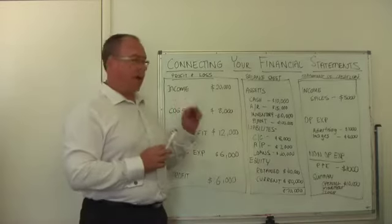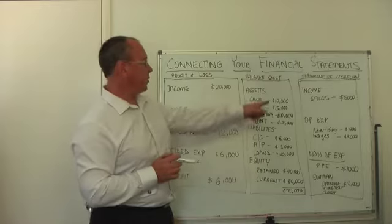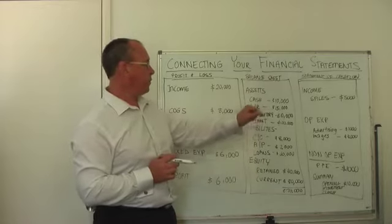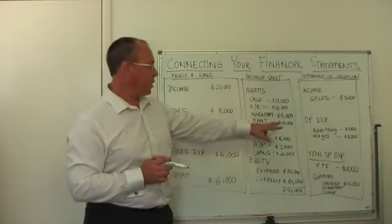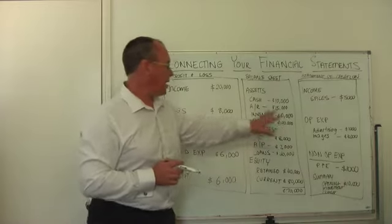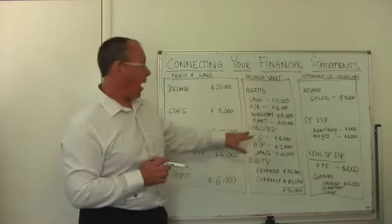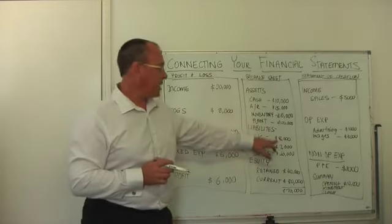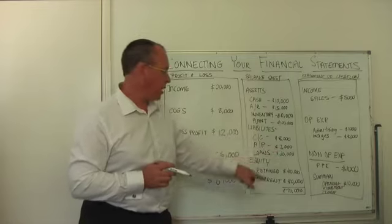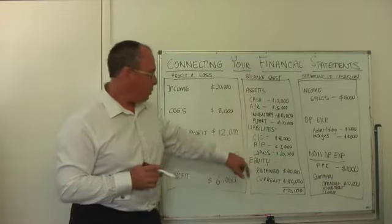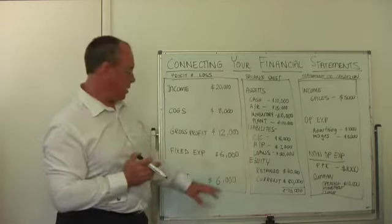At this particular snapshot, looking at the balance sheet, we've got $10,000 in the bank, we're owed $15,000, we've got $10,000 in inventory, and we've got plant worth $100,000 — so that makes up the assets of our business. Our liabilities: credit card debt of $8,000, accounts payable of $2,000 — money we owe people — and $50,000 in loans.